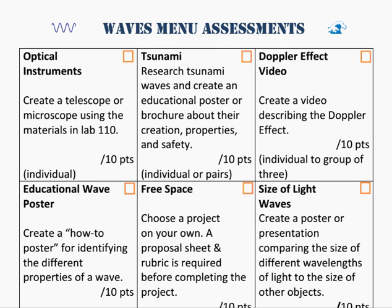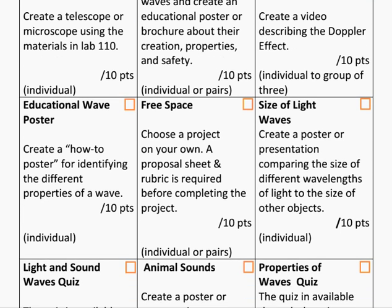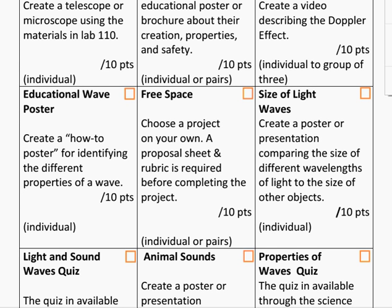One feature of this menu that's different than others is the free space in the middle of the tic-tac-toe board. This is not a free space as in bingo, but a freestyle space where students choose how they would like to complete that particular project. A sheet available in the lab or online gives a list of possible choices for this section. Students can also create their own rubric in the make-a-rubric section of the laboratory to help assess their own product.